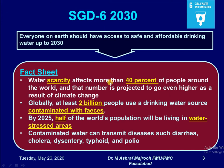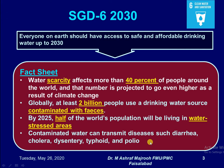Water scarcity affects more than 40% of the people around the world, and that number is projected to go even higher as a result of climatic changes. Globally, at least 2 billion people use drinking water sources contaminated with faeces. By 2025, half of the world population will be living in water stress areas. Contaminated water can transmit diseases such as diarrhea, cholera, dysentery, typhoid and polio.